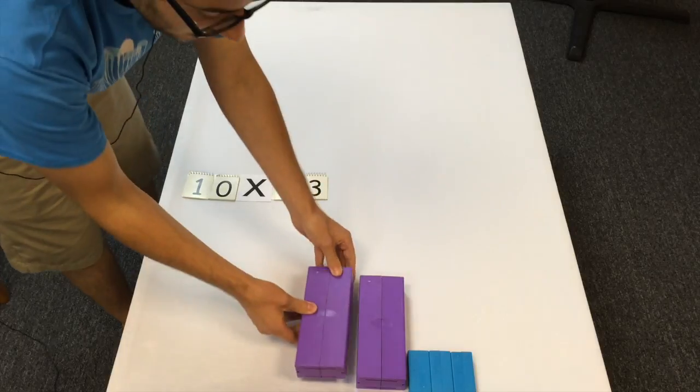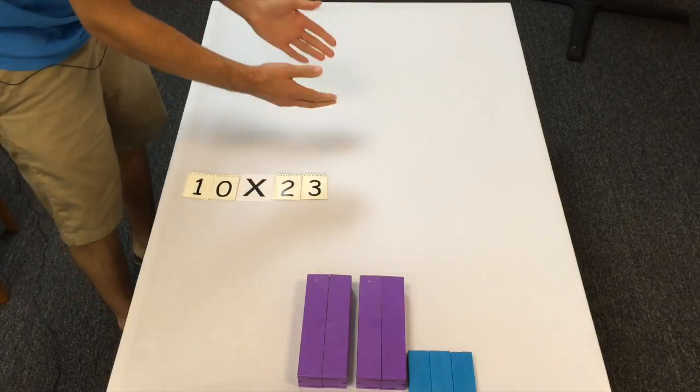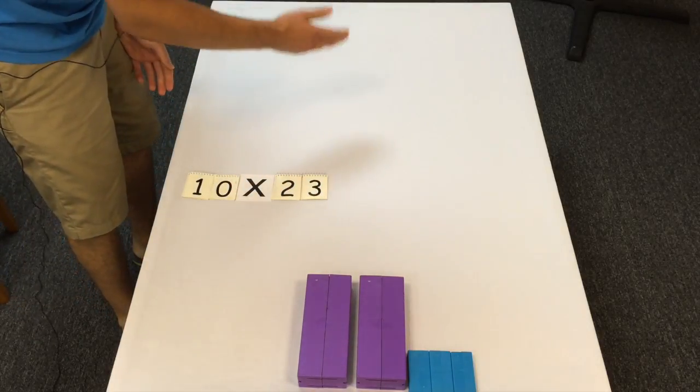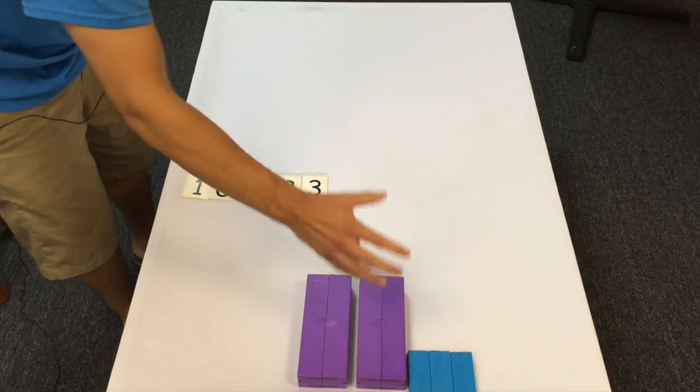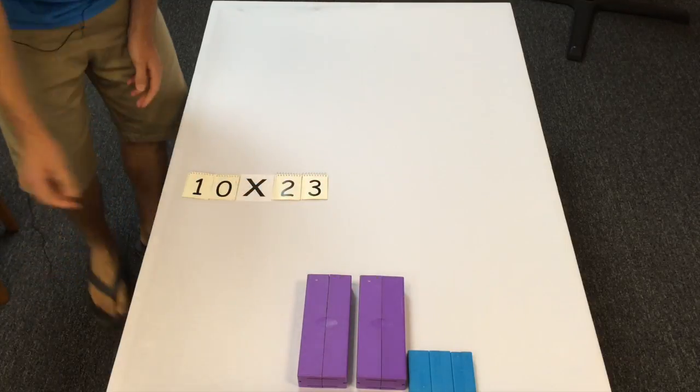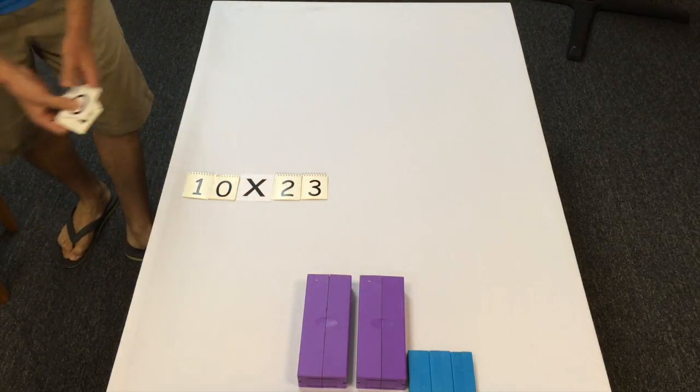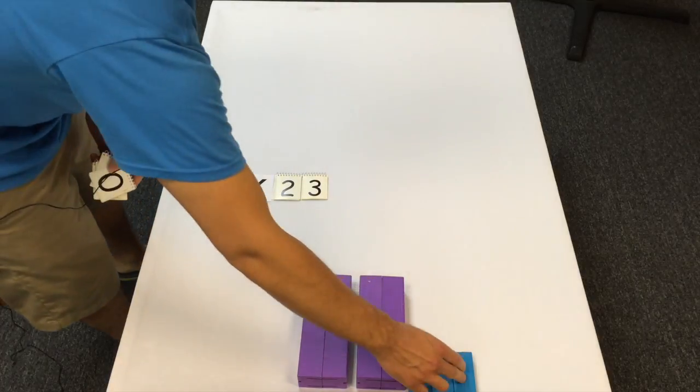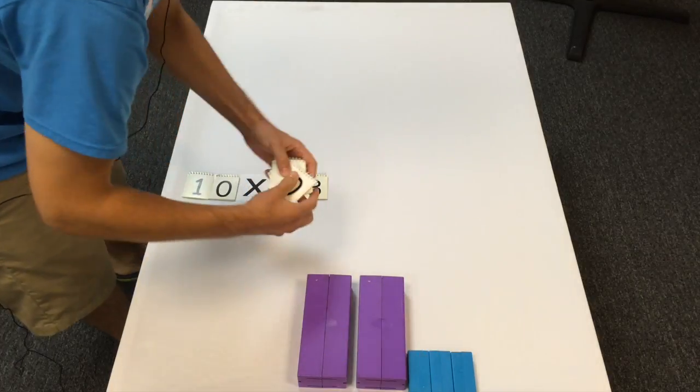And another hundred, and another hundred. Now the reason this works is because 10 is special. If we were multiplying by any other number, it wouldn't work out so beautifully.